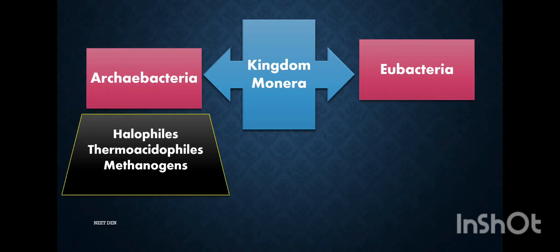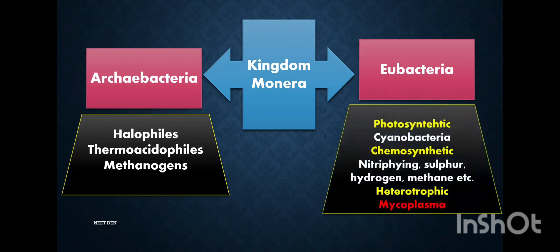Kingdom Monera has also been classified as Eubacteria — the true bacteria, present everywhere in the environment. They can be divided by mode of nutrition into autotrophs, which may be photosynthetic autotrophs like cyanobacteria, or chemosynthetic autotrophs like nitrifying bacteria and sulfur bacteria. Most commonly, eubacteria are heterotrophic. We also saw mycoplasma in Part 2, a type of bacteria with some special features.